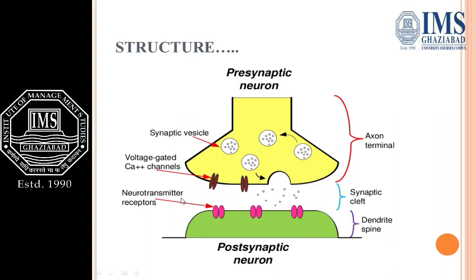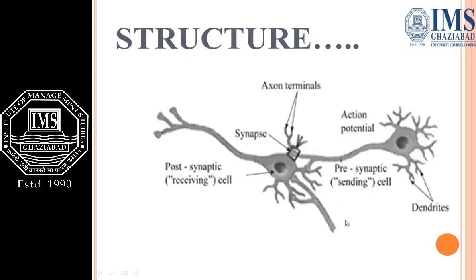There are channels present known as voltage-gated calcium channels. This part is known as the axon terminal. This is the cleft, this is the dendrite spine, and these are the receptors for neurotransmitters. The neurotransmitters are released here and collected by the neurotransmitter receptors. The post-synaptic is the receiving cell, and this is a physiological connection between two neurons.